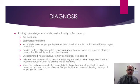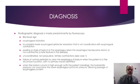Typical findings include what is termed the bird beak sign, caused by the lack of relaxation of the lower esophageal sphincter. The esophagus will be dilated, with incomplete relaxation of the lower esophageal sphincter that is not coordinated with esophageal contraction or peristalsis. There is pooling or stasis in the esophagus when it has become atonic or non-contractile. In some cases, you will see uncoordinated non-propulsive tertiary contractions.